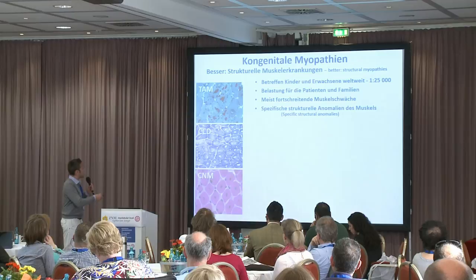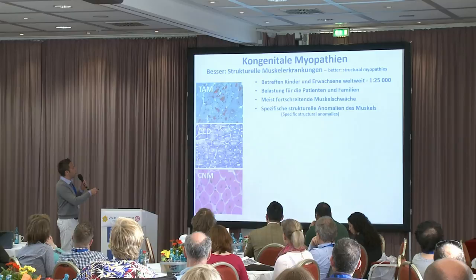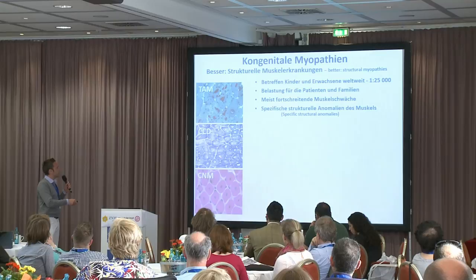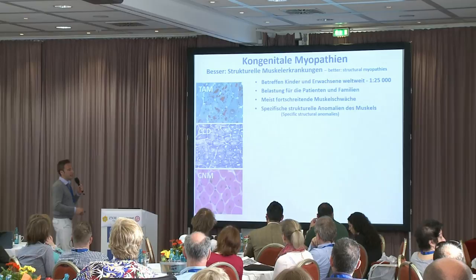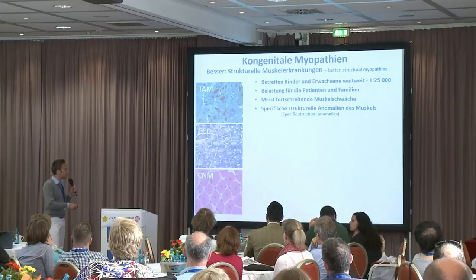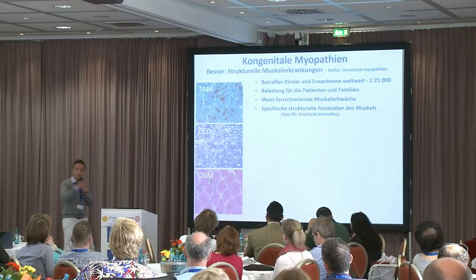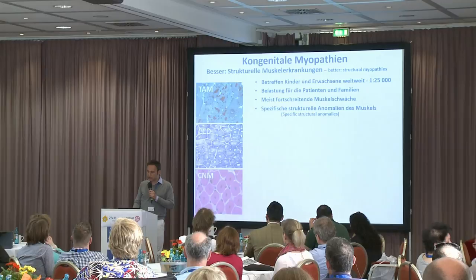From this histology, we can define the type of disease. The first staining, the first coloring, is called tubular aggregate myopathy. The middle one is called central core disease. And the picture on the bottom is something that you probably know — if the nuclei are in the middle, then this is called central nuclear myopathy.